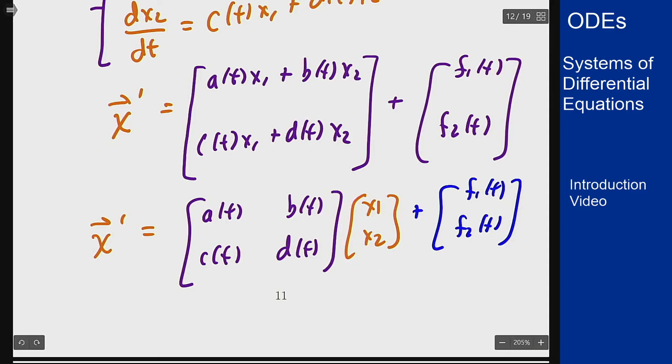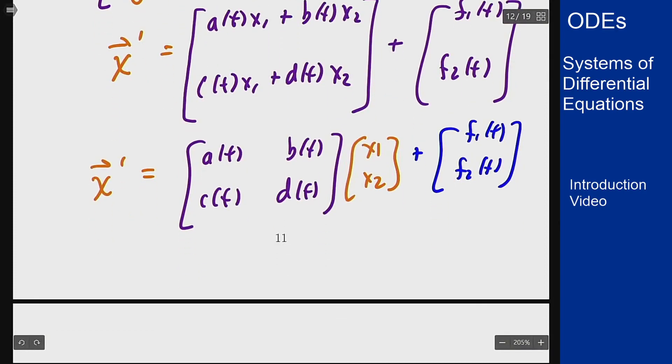So I end up with in this linear form something like x prime equals a matrix A of t times x plus a vector f of this non-homogeneous part here. So again, it comes back to looking a lot like our first order linear equations if you ignore the fact there's vectors and matrices going on.